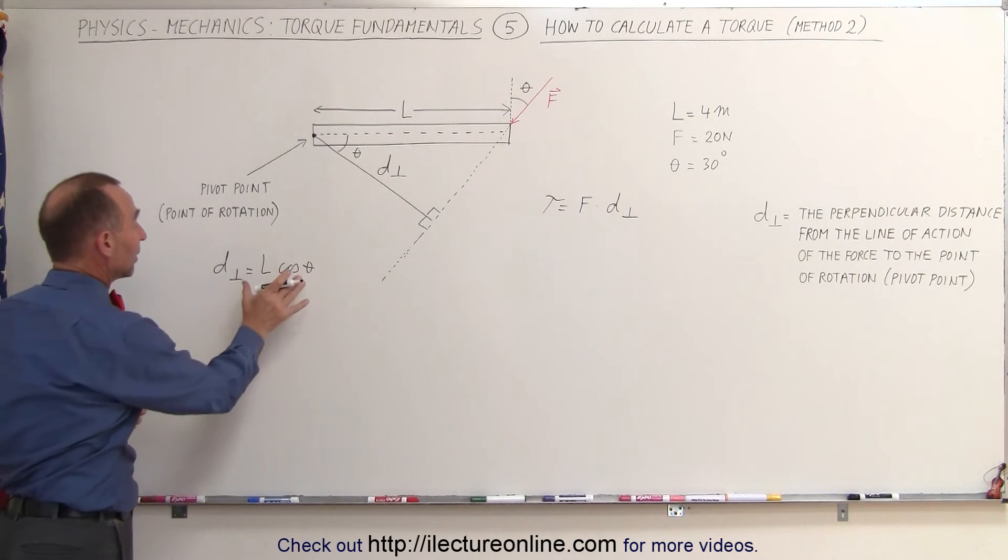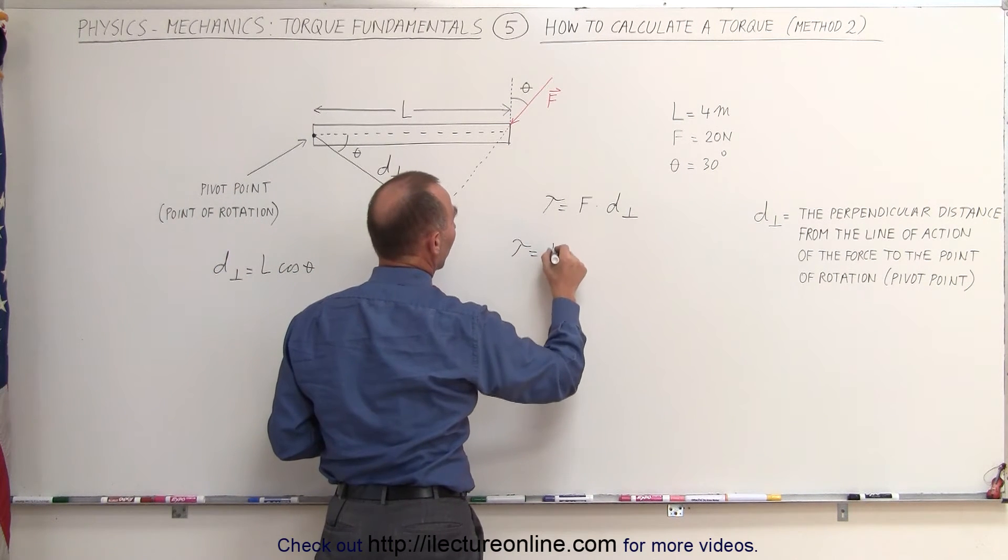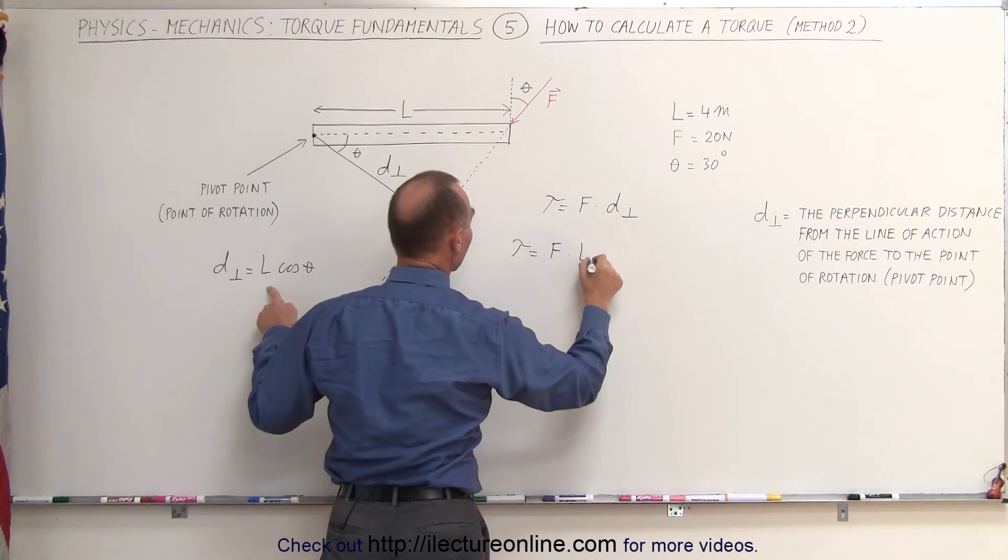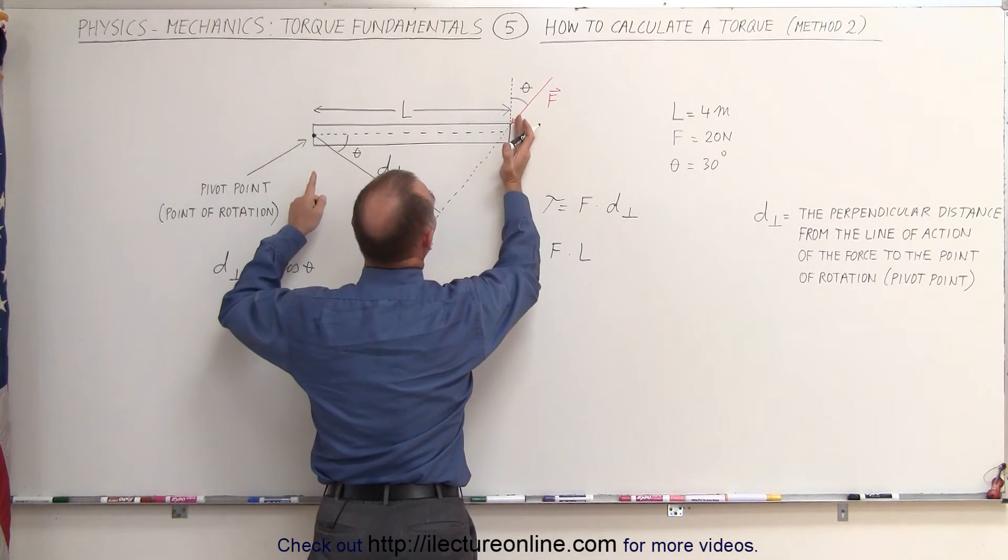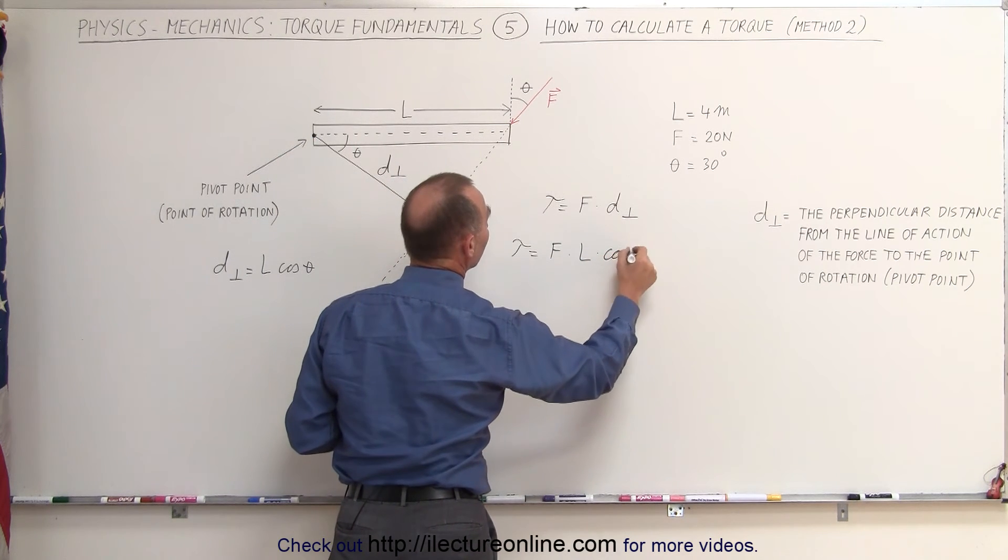Then all we have to do is plug this into the equation. We can see that the torque is equal to the magnitude of force times the length of that object, or the distance from where the force is acting to the pivot point, times the cosine of theta.